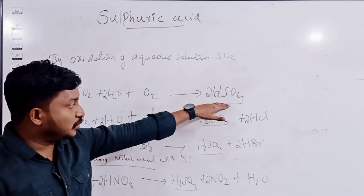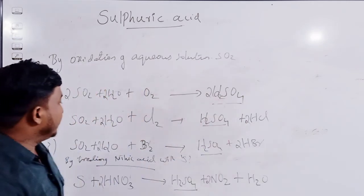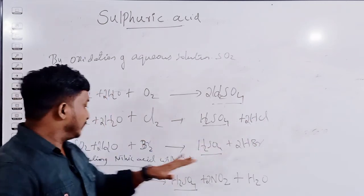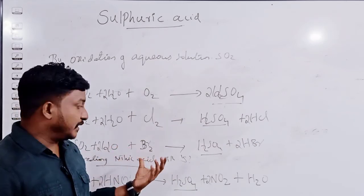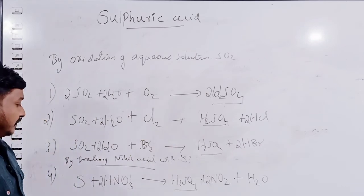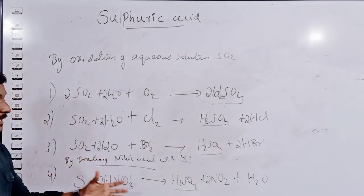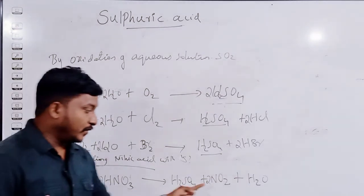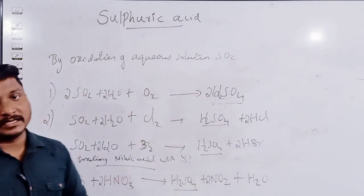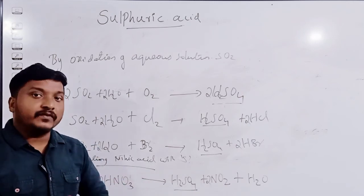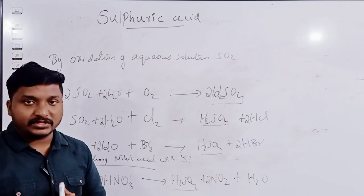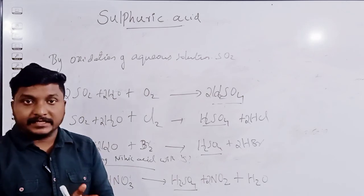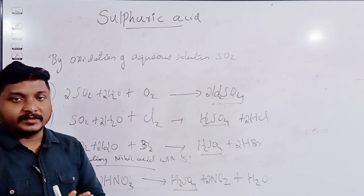So, by the addition of oxygen to aqueous solution of sulfur dioxide we get H₂SO₄. Addition of chlorine to aqueous solution of sulfur dioxide gives H₂SO₄ and HCl. Addition of bromine gives H₂SO₄ and hydrobromic acid. We can also prepare sulfuric acid by treating sulfur with nitric acid: S + HNO₃ → H₂SO₄ + NO₂ + H₂O. Please learn these equations. Thank you.